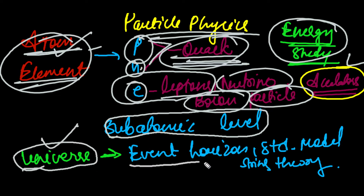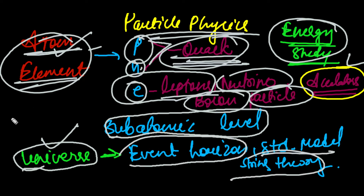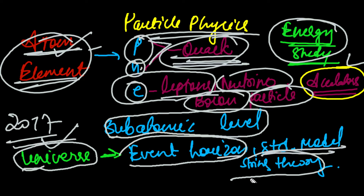We want to know the origin of the universe, and there are many theories like event horizon, standard model, and string theory. These theories — event horizon, standard model, and string theory — are about explaining the origin of the universe.